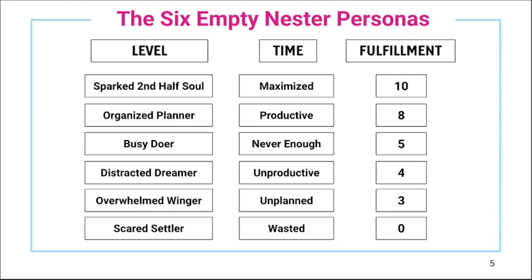Here is the chart. I'm going to go over these in complete detail, but I also want to talk about the elements of time and fulfillment, because these are variables that play into the different personas. Starting at the bottom: the Scared Settler. She is what I consider the very lowest in terms of fulfillment and how she values time. Time is an element — we either value it or we don't, and your behavior will indicate whether you value it or not. The older we get, the more pressured it becomes.